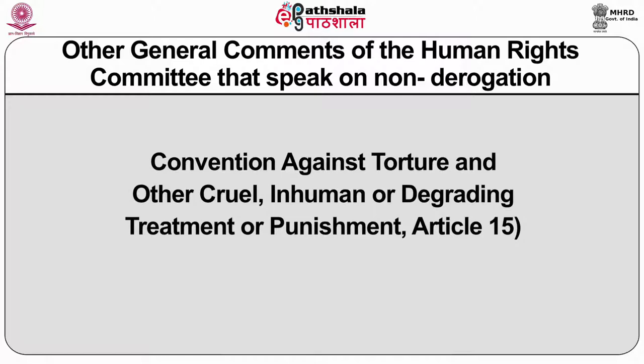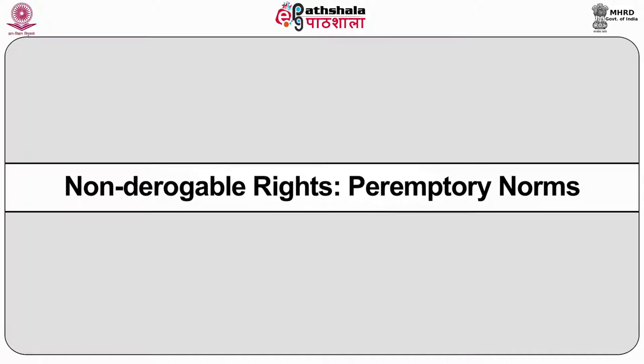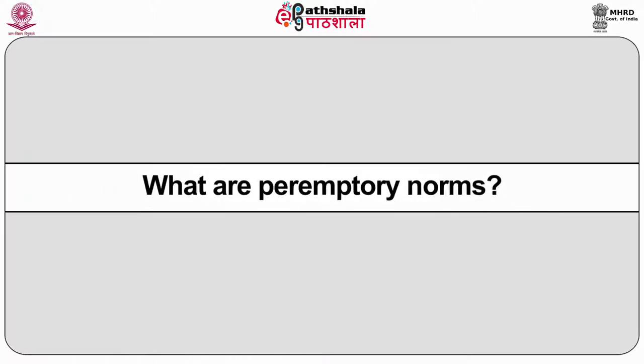Convention Against Torture and Other Cruel, Inhuman or Degrading Treatment or Punishment, Article 15. Non-derogable rights and peremptory norms. Peremptory norms are certain overriding principles of international law which form a body of jus cogens. Article 53 of the Vienna Convention on the Law of Treaties is recognized as setting out the current internationally accepted definition of jus cogens.